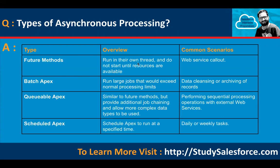Future Method basically runs in its own thread and does not start until resources are available. A common scenario is web service callouts. Batch Apex runs large jobs that would exceed normal processing limits — common scenarios are data cleansing or archiving of records. Queueable Apex is similar to future methods but provides additional job chaining and allows more complex data types. Common scenarios include performing sequential processing operations with external web services.